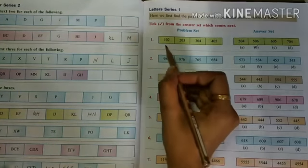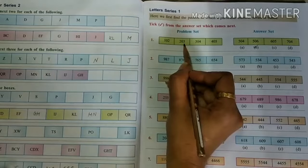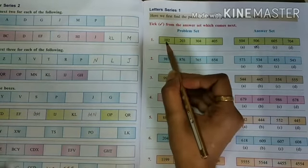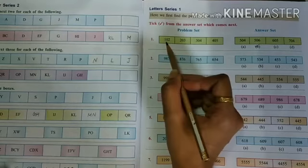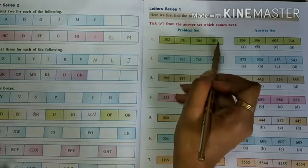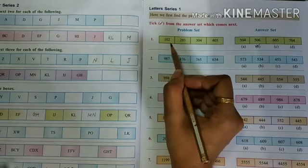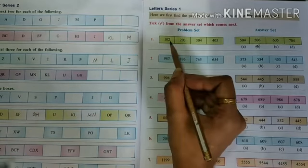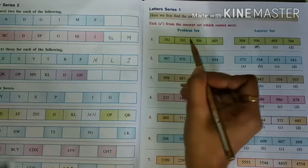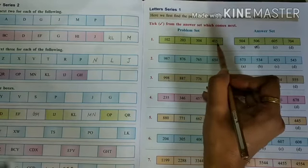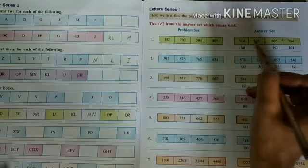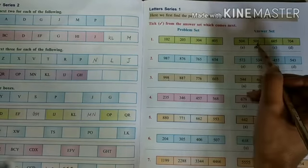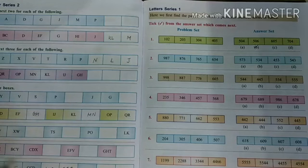Number 1: 102, 203, 304, 405. Here the first number is increasing, the second number is constant — it remains the same — and the third number is also increasing. After 4, 5 comes; 0 will be constant, and after 5, 6. So the answer is B: 506.